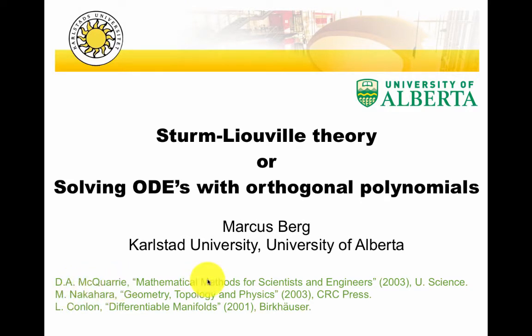Macquarie is a mathematical physics book. Nakahara is more in the direction of mathematics, and Conlon is a mathematics book.